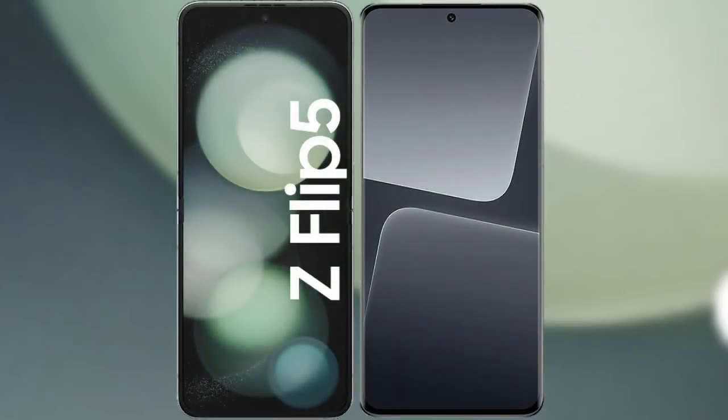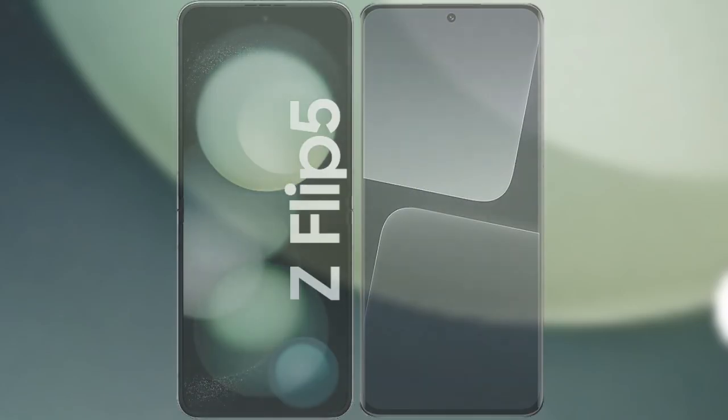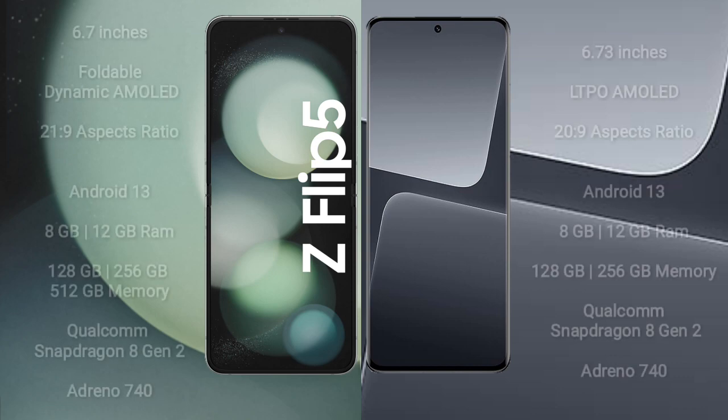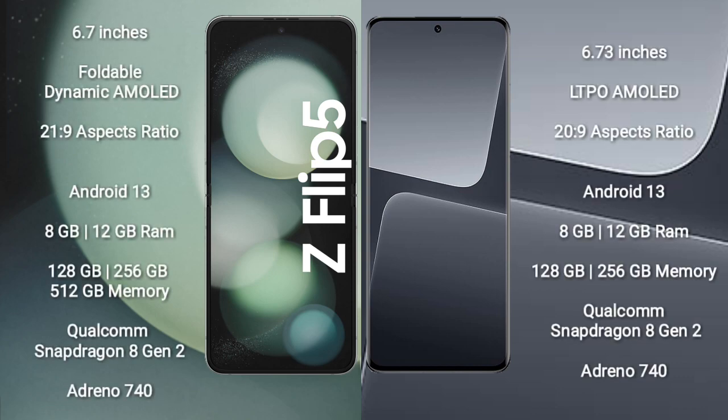I will compare the new Samsung Galaxy Z Flip 5 with Xiaomi 13 Pro. Samsung Galaxy Z Flip 5 comes with a 6.7-inch foldable dynamic AMOLED display with an aspect ratio of 21:9. Xiaomi 13 Pro comes with a 6.73-inch LTPO AMOLED display with an aspect ratio of 22:9.